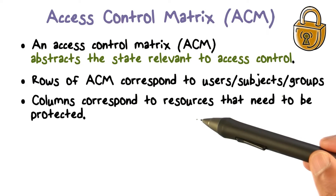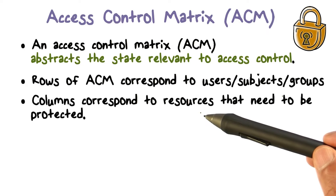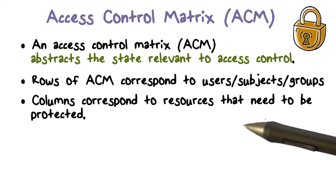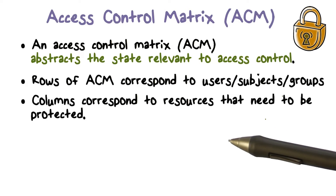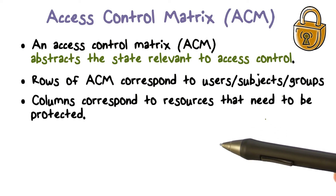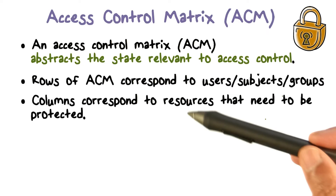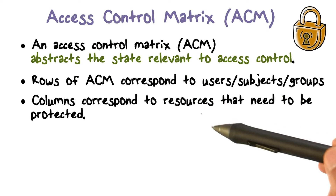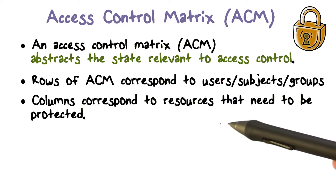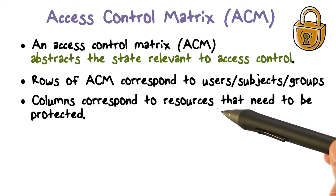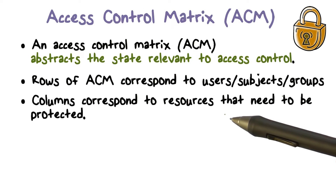Rows correspond to users. Columns are going to correspond to resources that we have in the system. Each resource that needs to be protected — we need to know who is allowed to access it or not. So this matrix tells you, for a given user (that's a row) and a given resource or object, what can be done. The columns correspond to all the resources that need to be protected in the system.